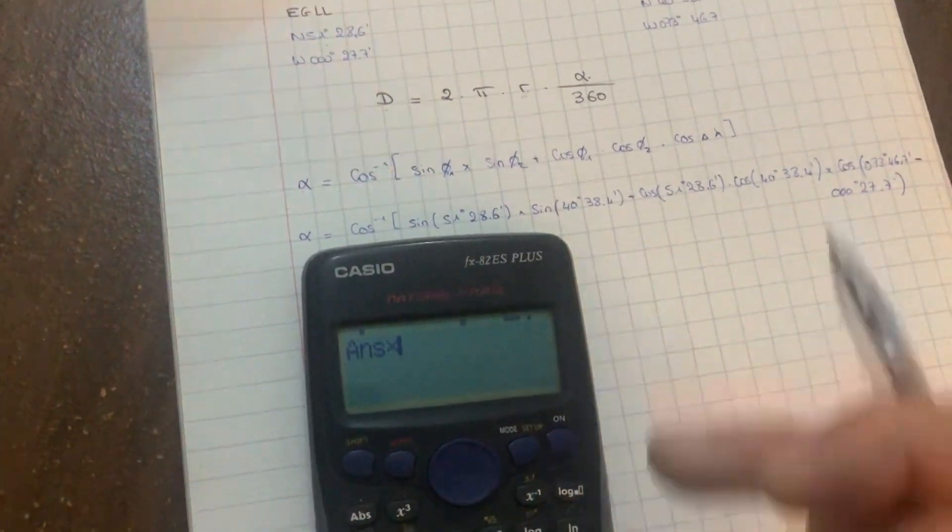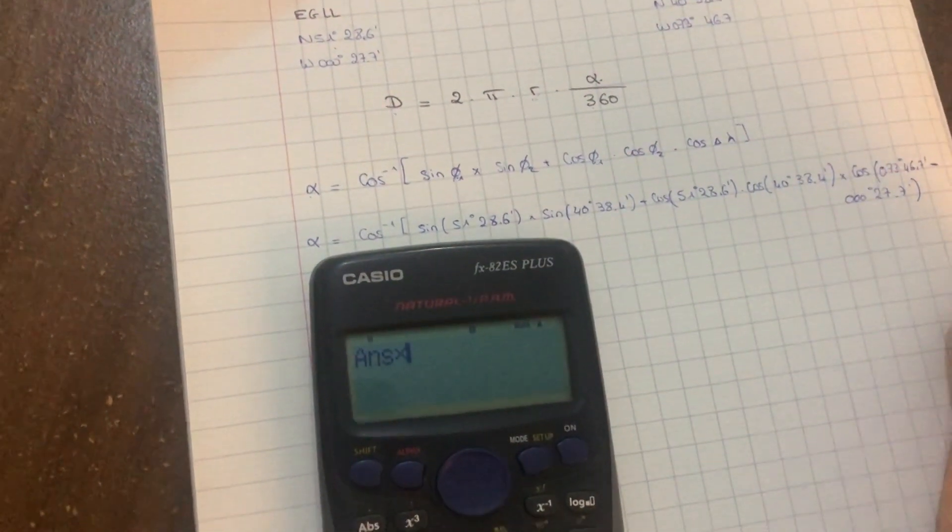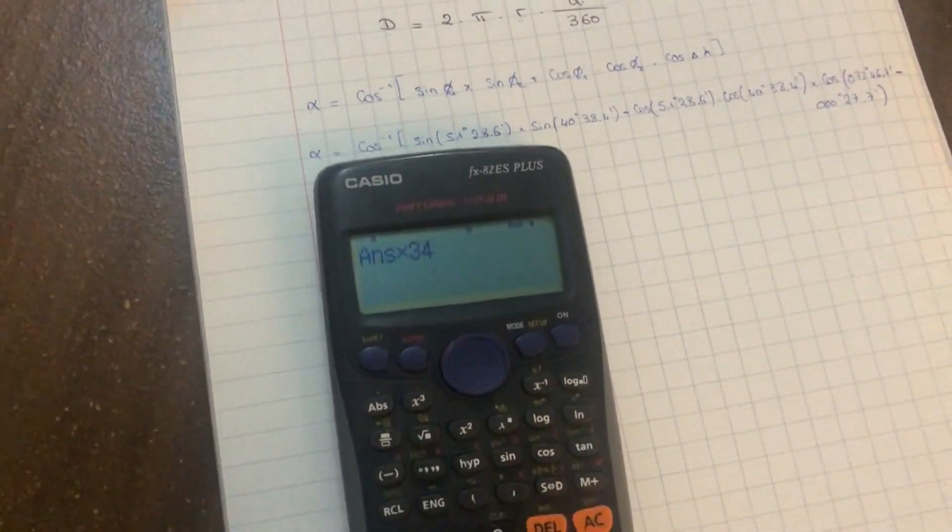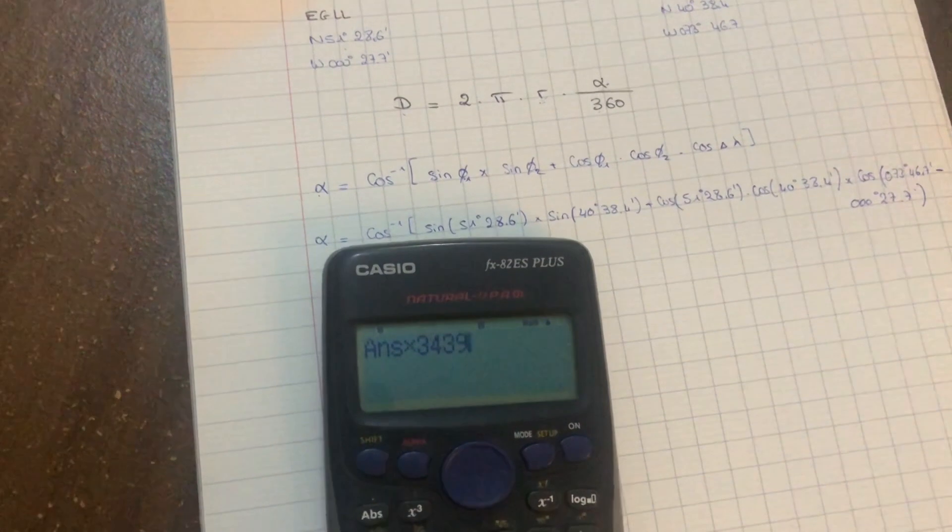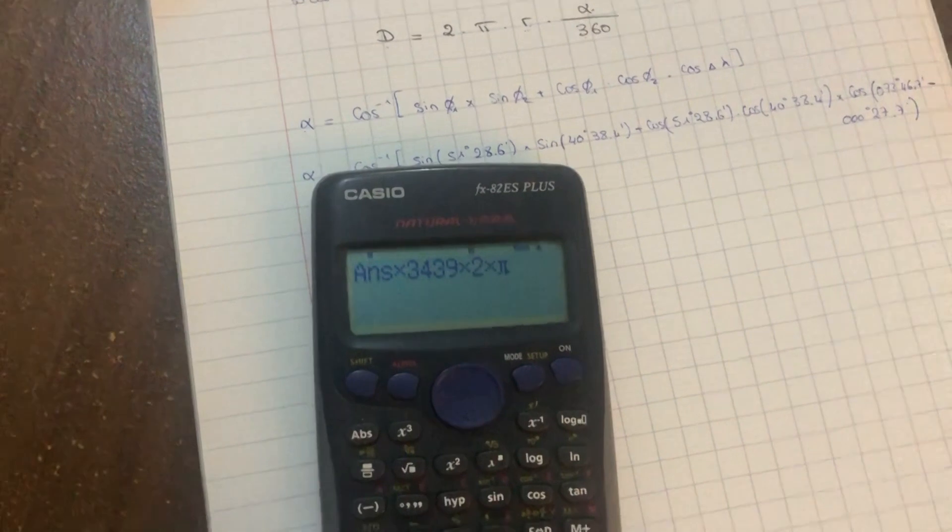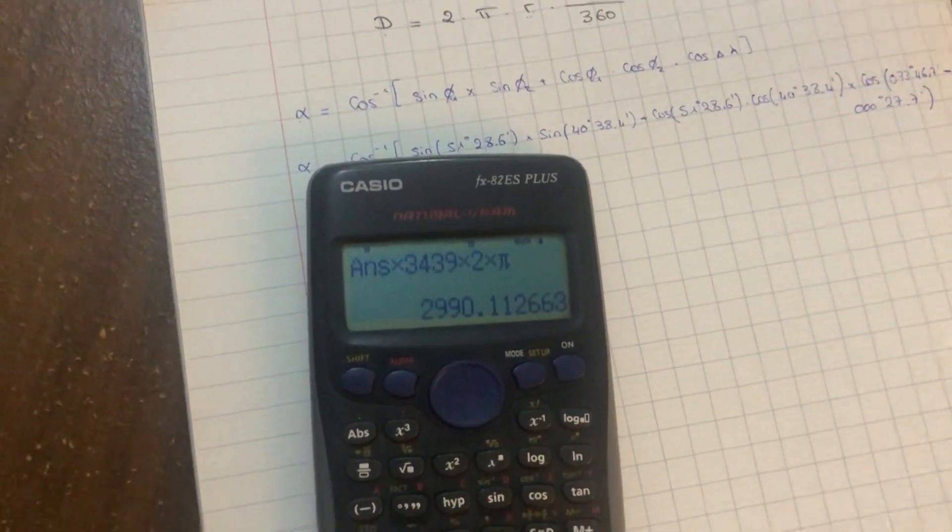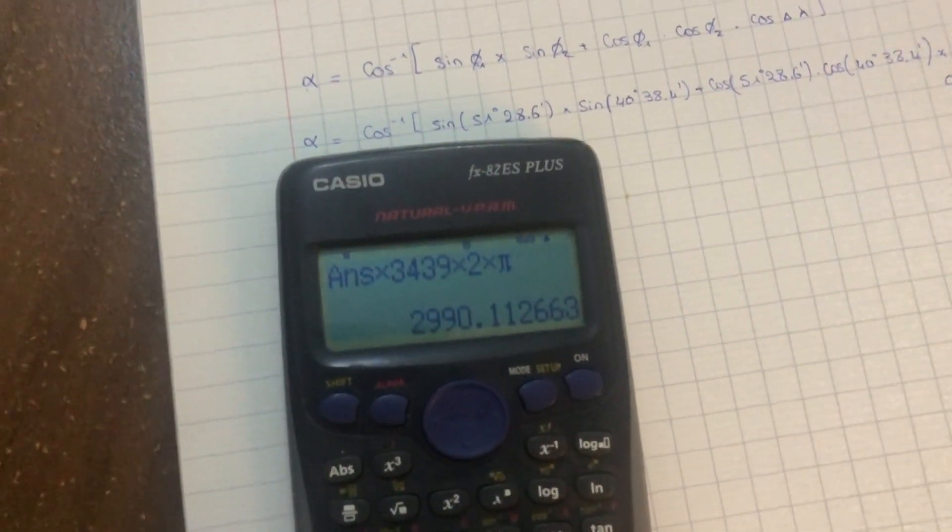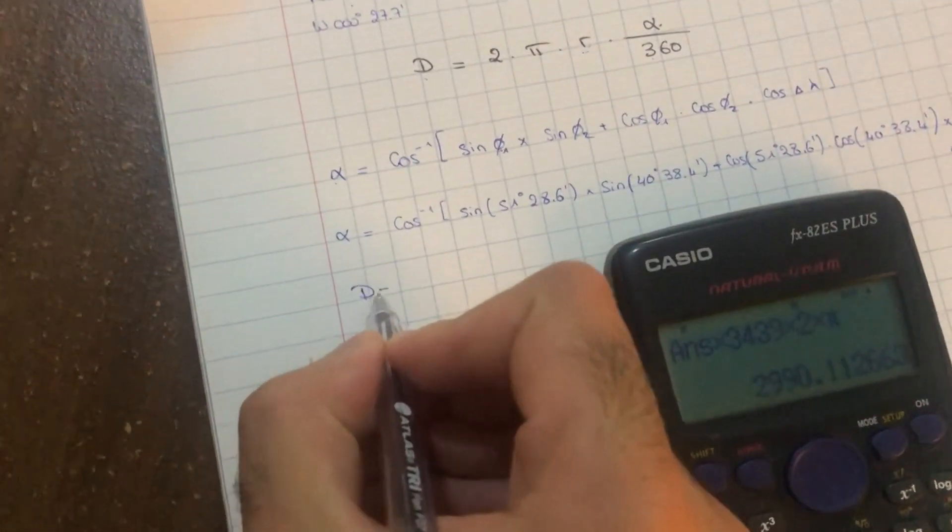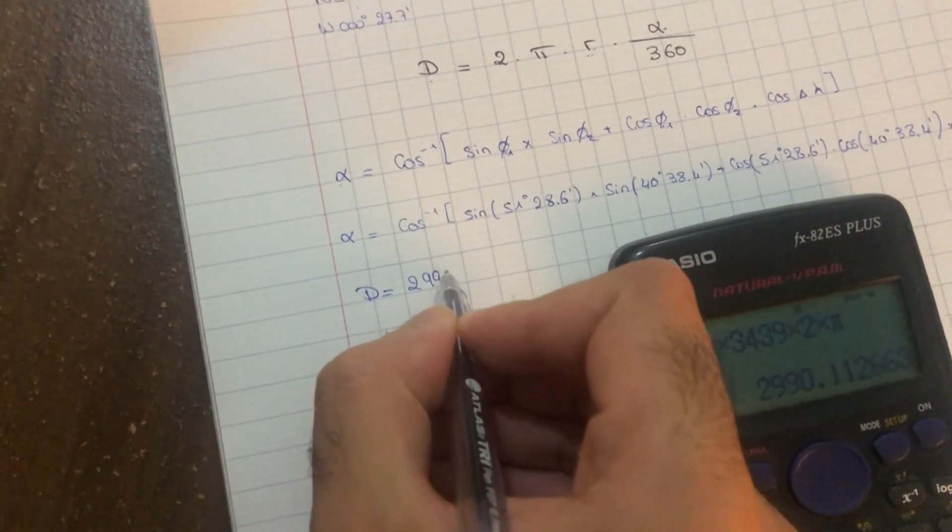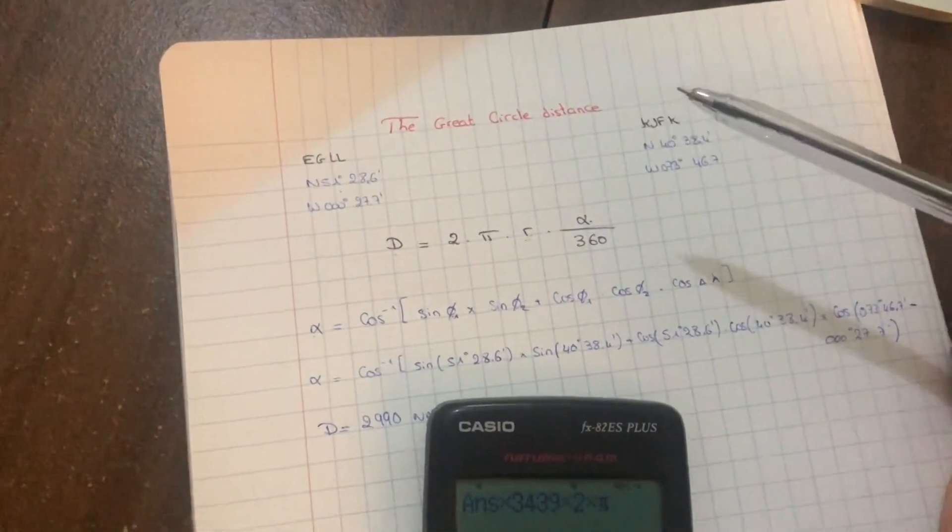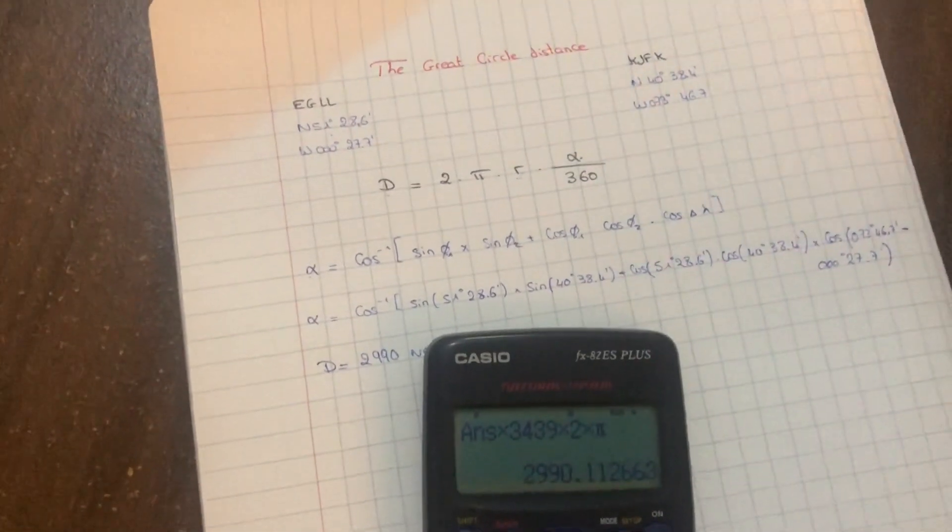360, we multiply that by the radius of the Earth, which is approximately 3,439 nautical miles, times 2 times π. It will give us roughly 2,990 nautical miles. So that is the distance between London Heathrow Airport and KJFK Airport.